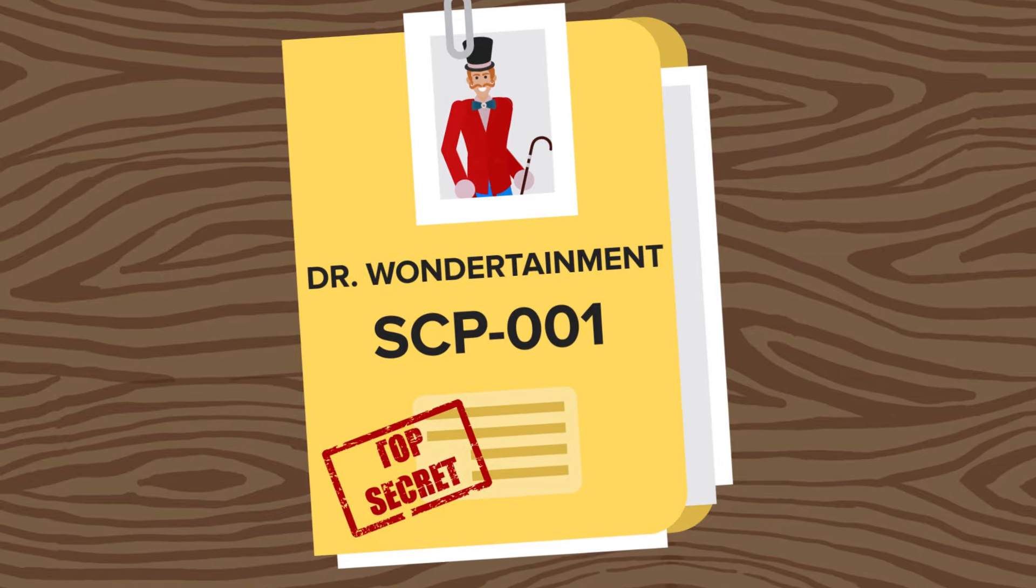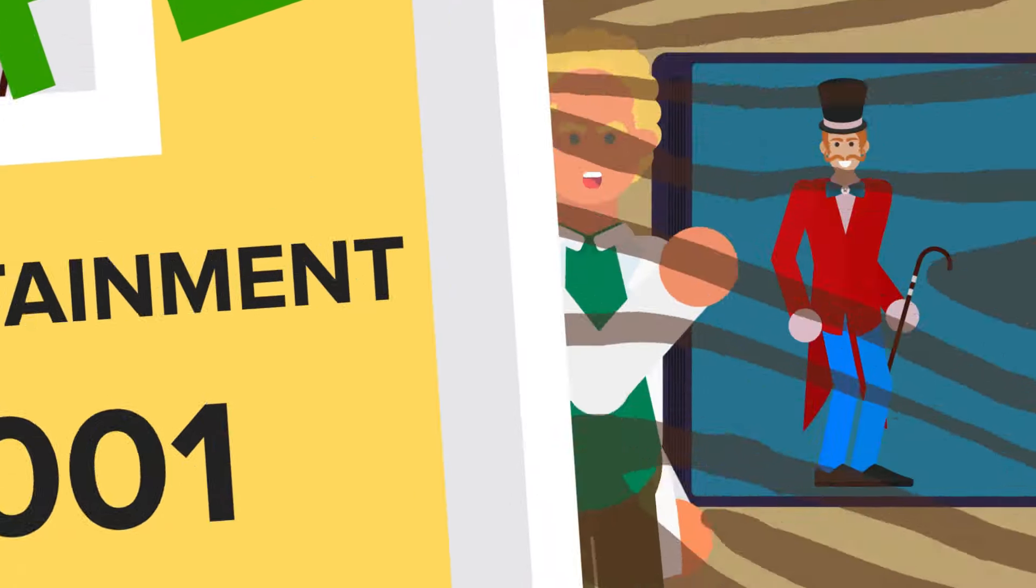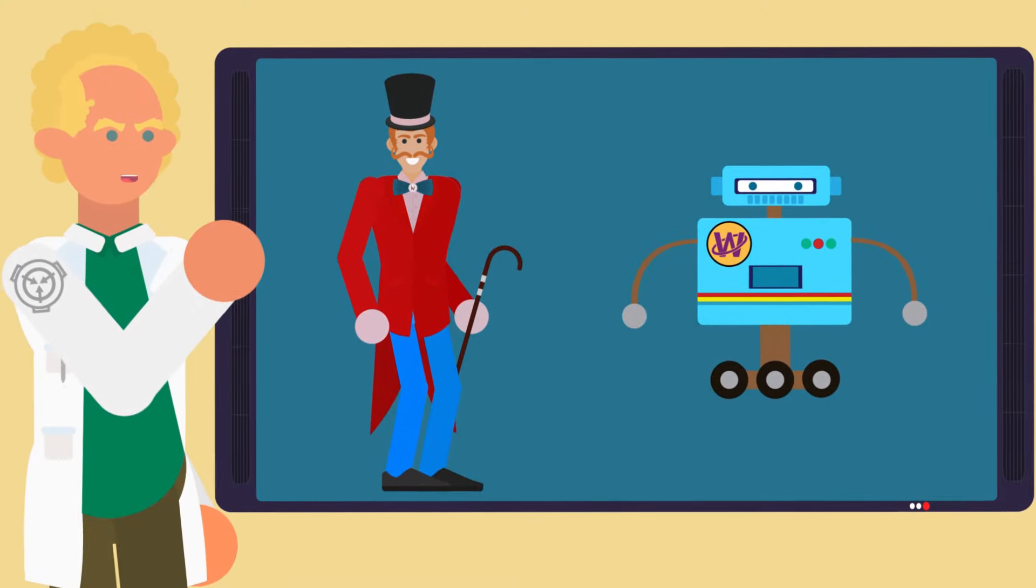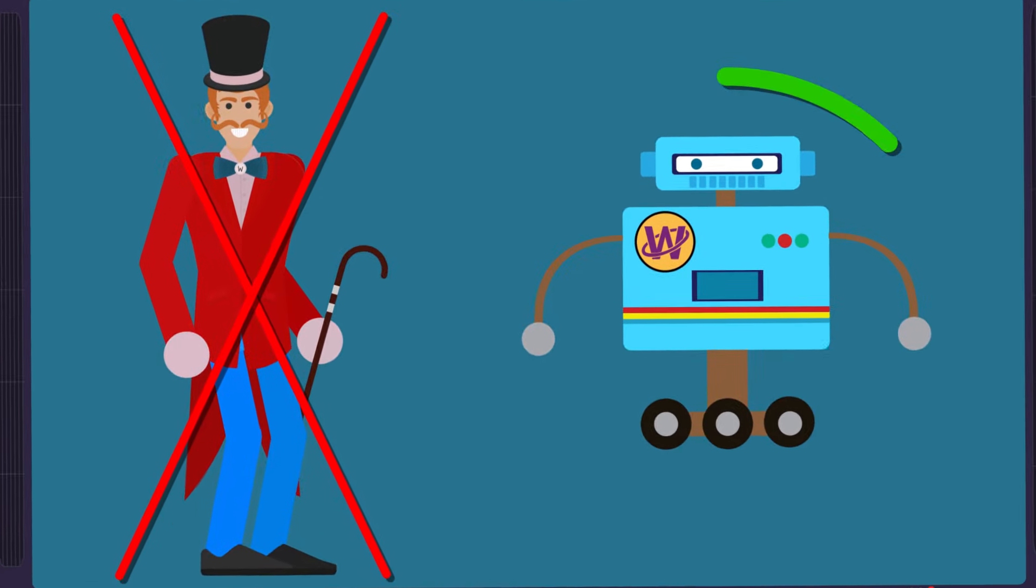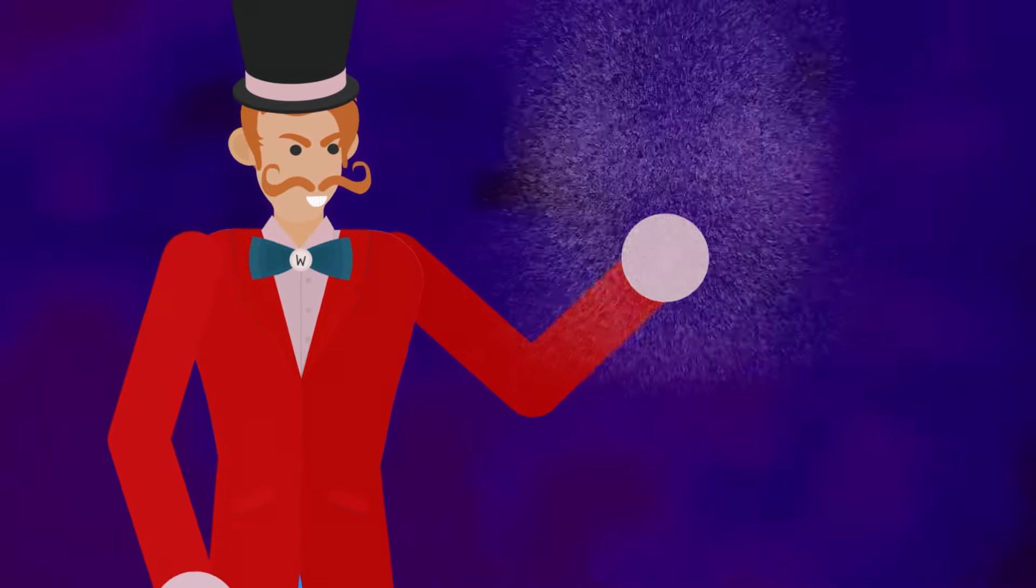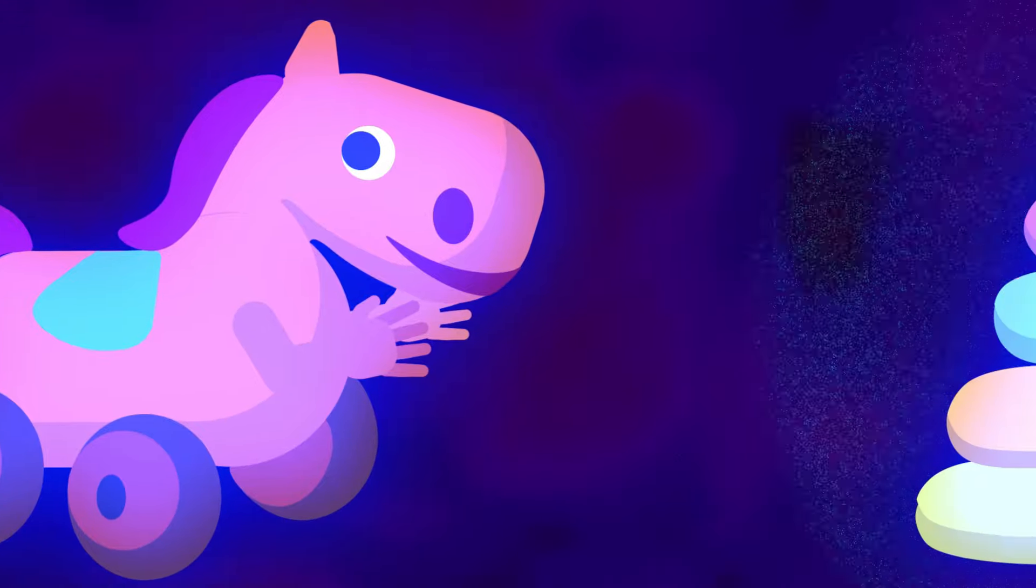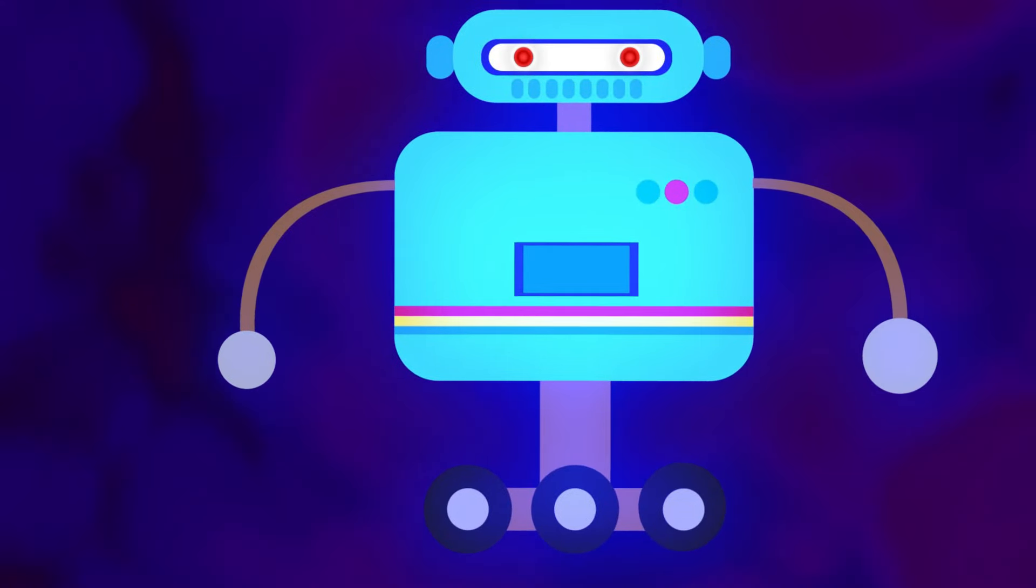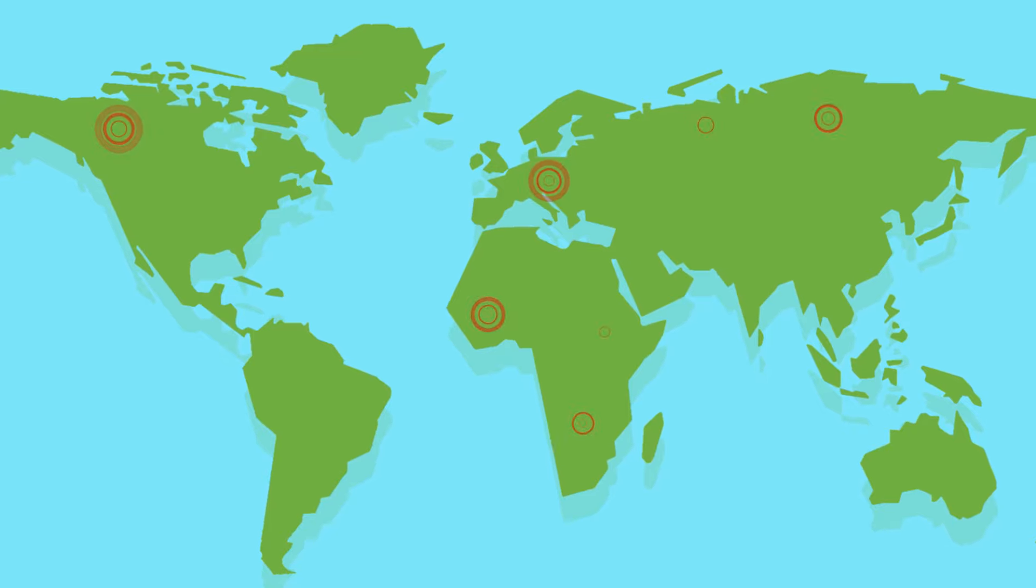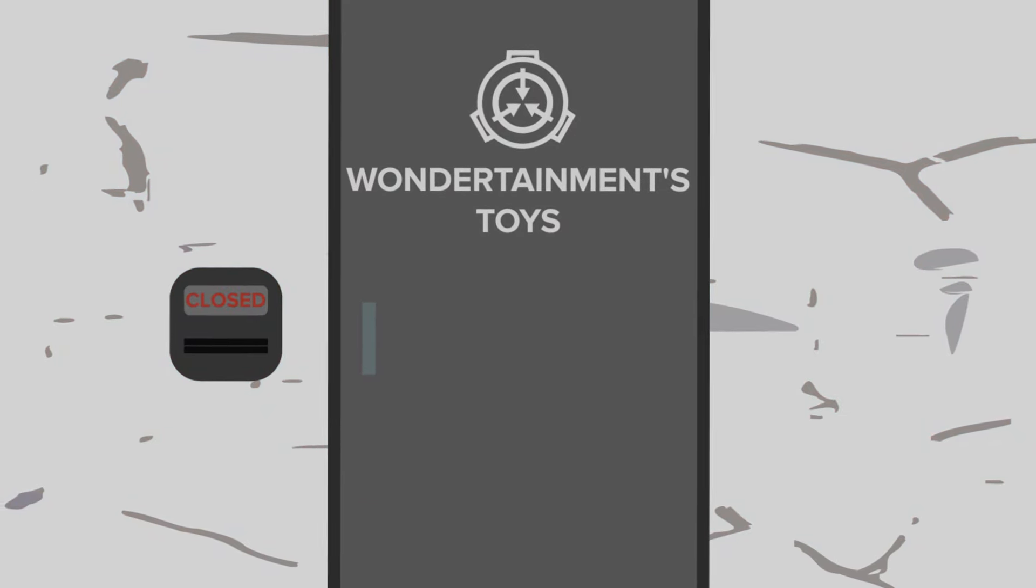Dr. Wondertainment is the name given to SCP-001, who due to his relatively benign nature has been classified as safe by the Foundation. Rather than focusing on containing Wondertainment himself, the SCP Foundation has centered its efforts on containing the products that he creates. He is a Class 1 Reality Warper capable of constructing otherwise normal objects and imbuing them with anomalous properties. He's become infamous for using this ability to create bizarre, magical, and potentially dangerous toys and games that are distributed by as yet unknown means.